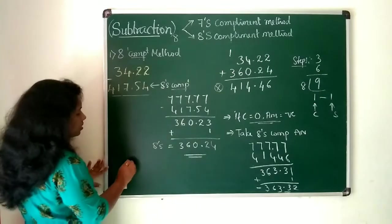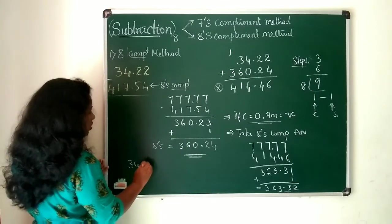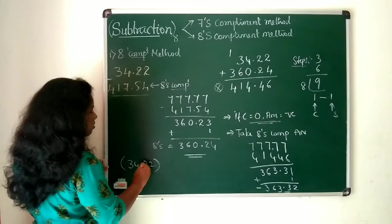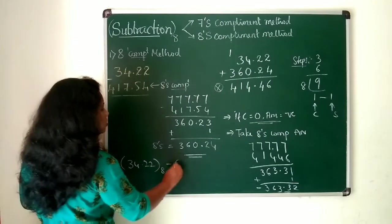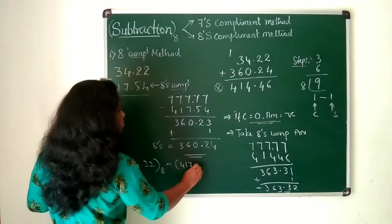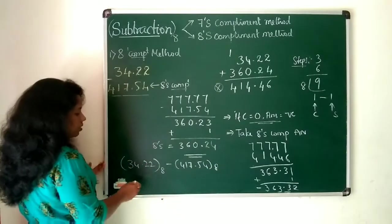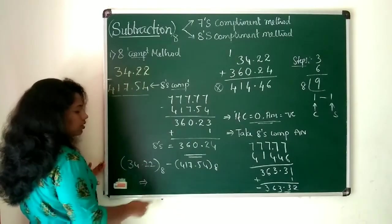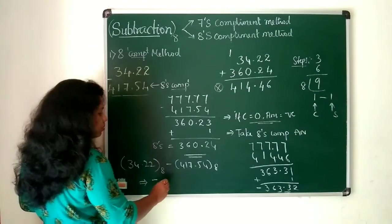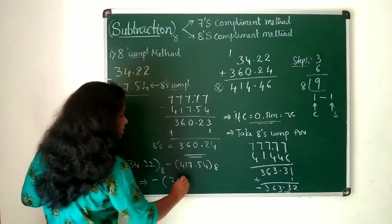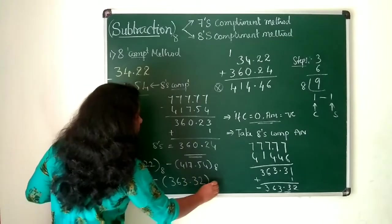So I can write the answer like this: 34.22 which is an octal number minus 417.54 is also another octal number. The answer is negative 363.32.